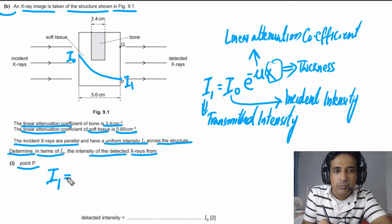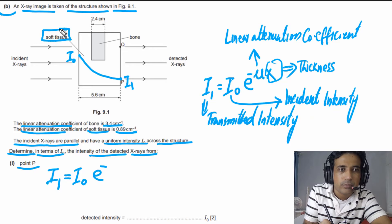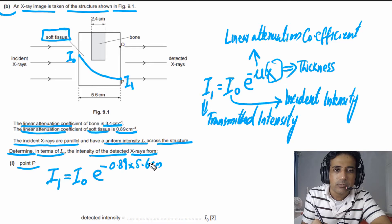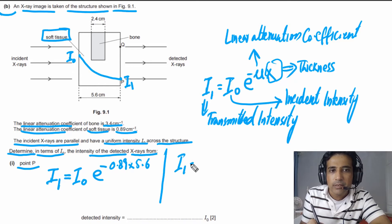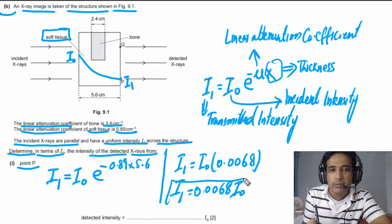To find intensity at point P, X-rays pass only through soft tissue. So I₁ = I₀ e^(−0.89 × 5.6). The units cancel, and solving this gives I₁ = 0.0068 I₀.